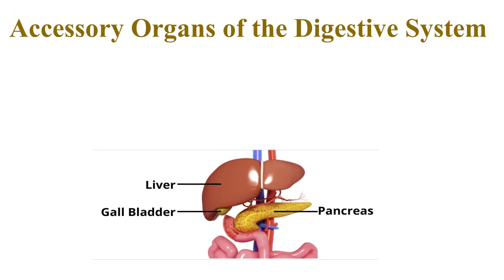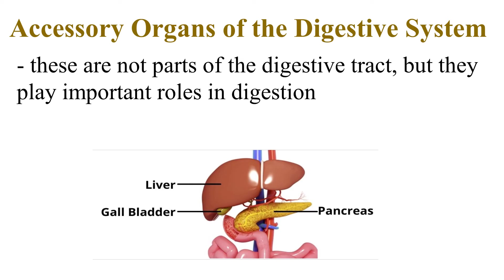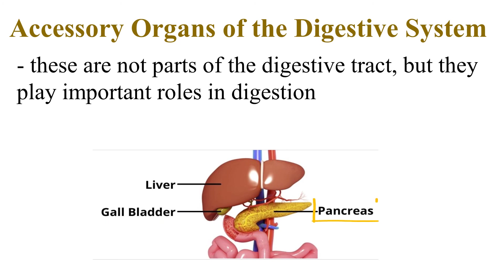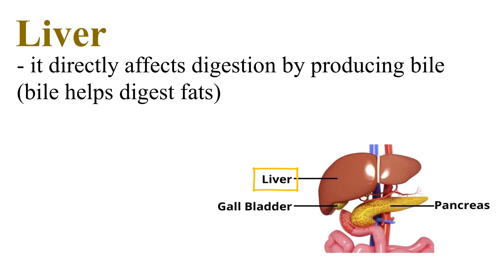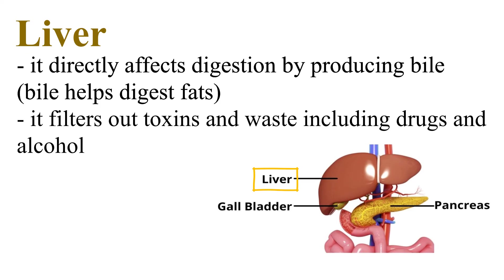The accessory organs of the digestive system are not parts of the digestive tract, but they play important roles in digestion. They are the liver, gallbladder, and pancreas. The liver directly affects digestion by producing bile, which helps digest fats. It also filters out toxins and waste, including drugs and alcohol.